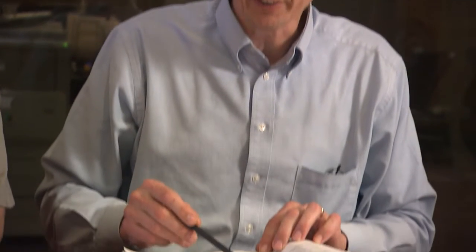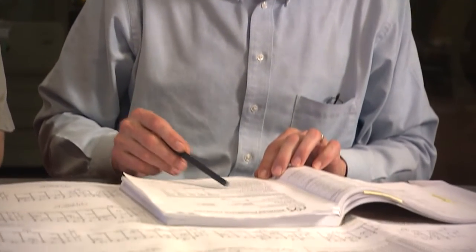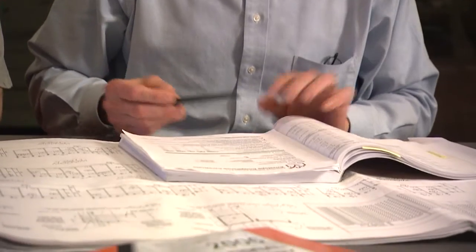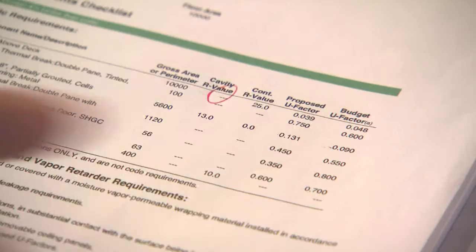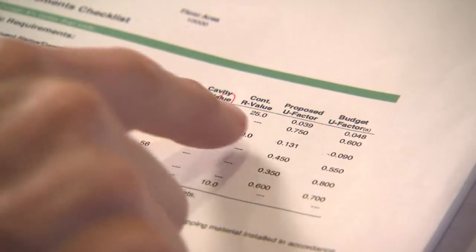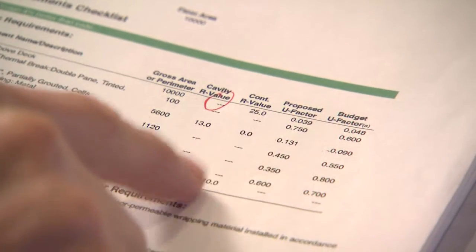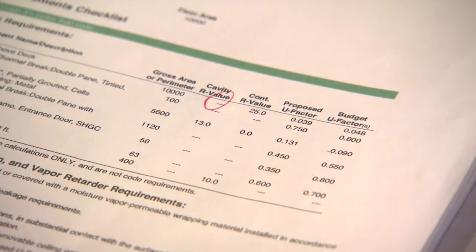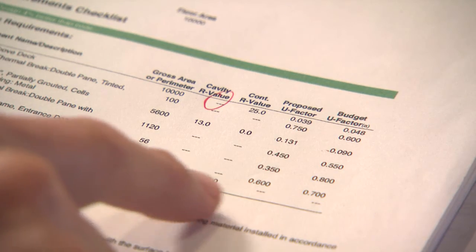For example, COMCHECK documentation could be used as an alternative for the prescriptive approach. This alternative documentation should demonstrate an area-weighted trade-off, where some assemblies exceed code and others may not meet code, and the documentation validates compliance with the energy code.